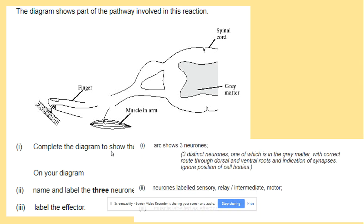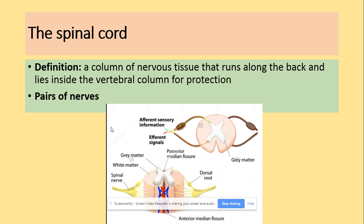We've got the sensory neuron, because this diagram shows the reflex arc and the response. The three neurons we need to label are: the sensory neuron, the intermediate neuron, and the motor neuron, which takes a message from the spinal cord to the effector — which is a muscle. To label the effector, the effector is a muscle. The spinal cord is a column of nervous tissue that runs along the back and lies inside the vertebral column for protection, and there are pairs of nerves — this is the spinal nerve.